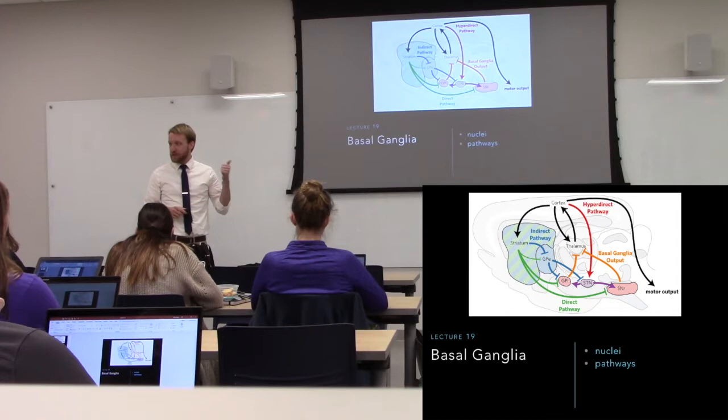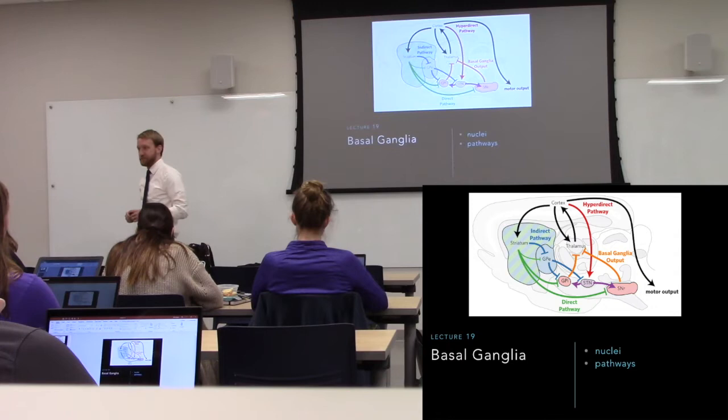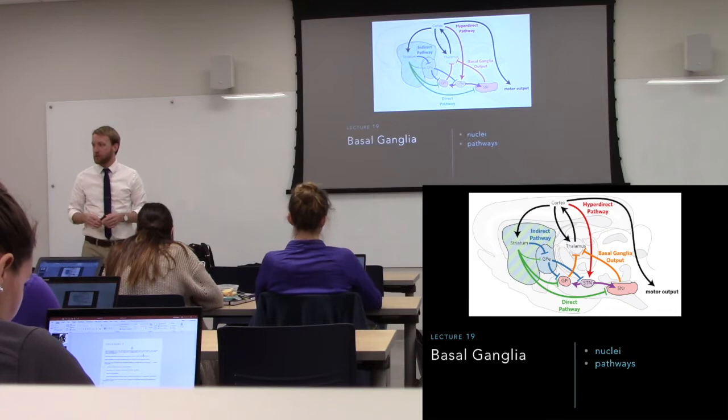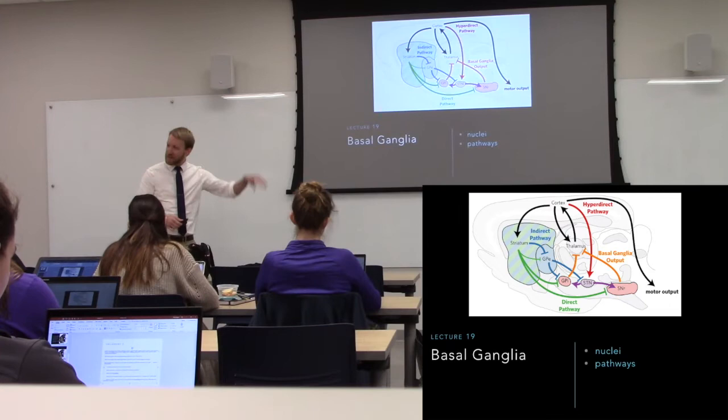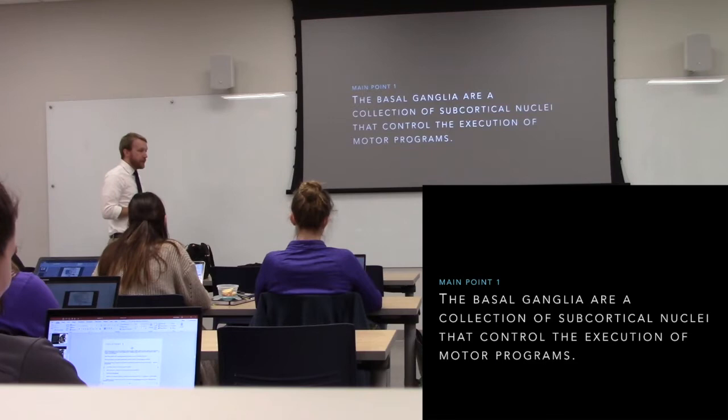As you can see up here, it's a lot of inhibition — notice those blunt arrows, a lot of GABA here. There's really only one glutamatergic player besides the cortex, and that's our STN, the subthalamic nucleus. Everything else is GABAergic, except for the dopamine and cholinergic neurons.